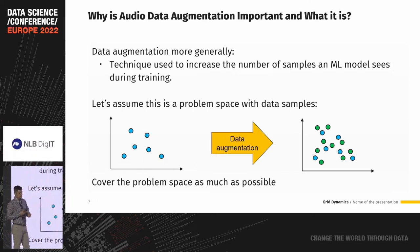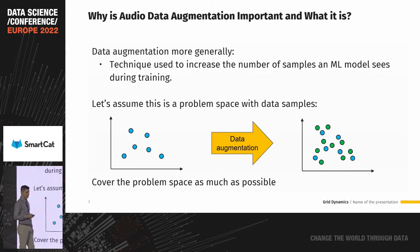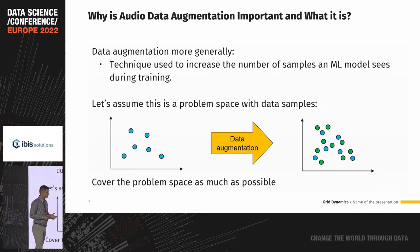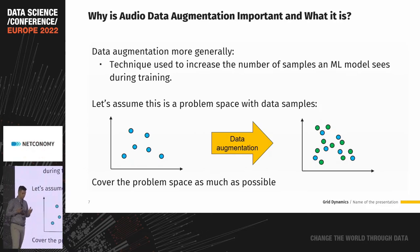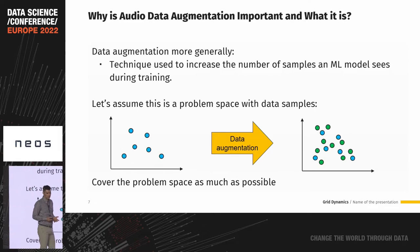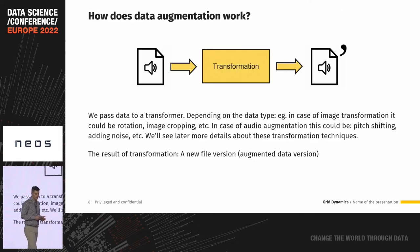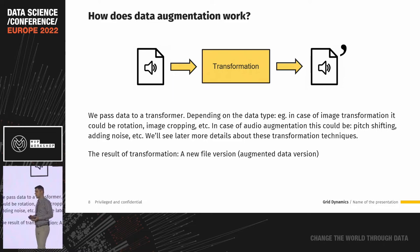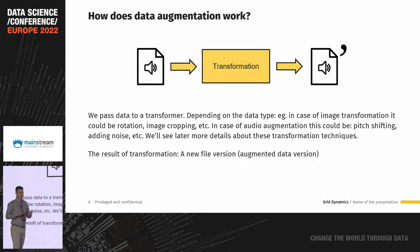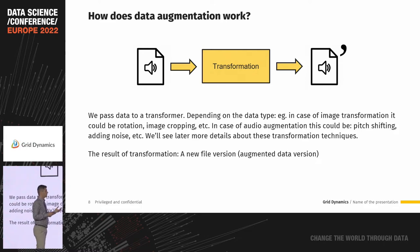Let's take one example. Assume we have some problem space represented by blue dots. By applying data augmentation, we generate new similar data samples represented by green dots. We are trying to cover the problem space as much as possible. In the case of audio data augmentation, we have an audio file as input to a transformer, which performs some kind of transformation — usually digital signal processing — and we get augmented data versions as output.